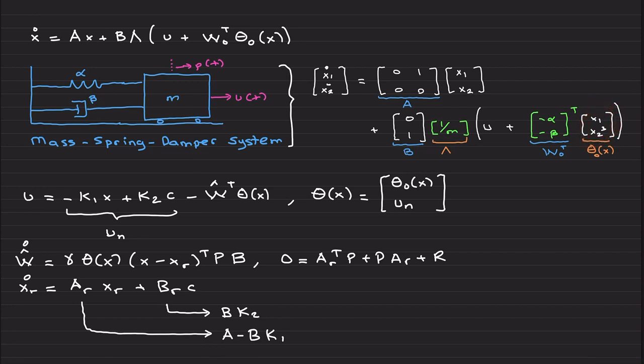We have a nominal controller and an adaptive controller. Don't forget that theta you implement is different than theta zero—it needs to include your nominal control signal as well for the reason I explained in the previous video.